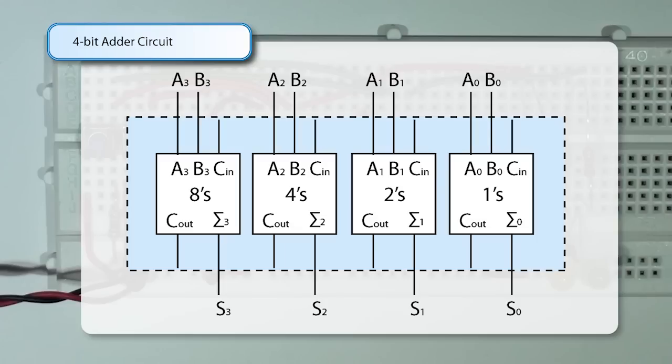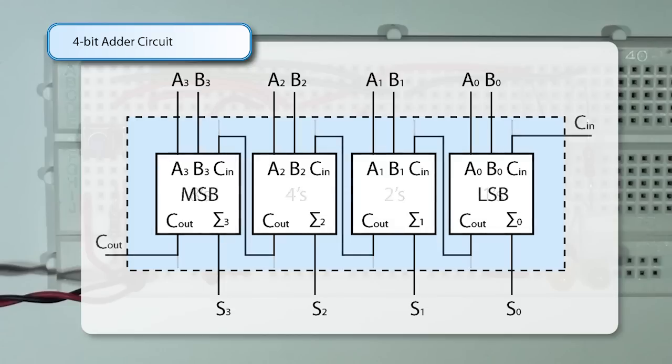The problem we have is we still haven't dealt with the carries. If you look at the carries, we can just simply connect them together, so we can take the carry out from stage 0, which is the least significant bit, and we can provide that as an input into stage 1, which is the second least significant bit, and so on right up to the third stage.